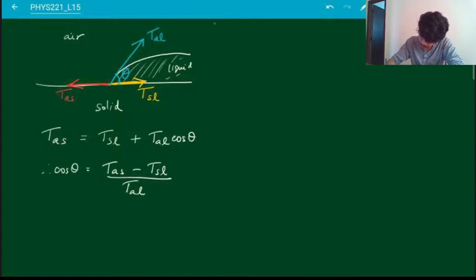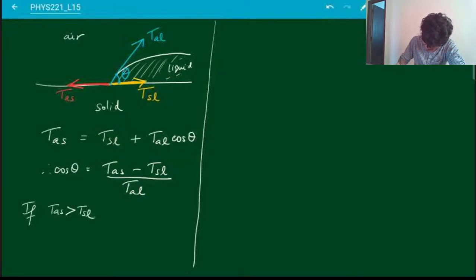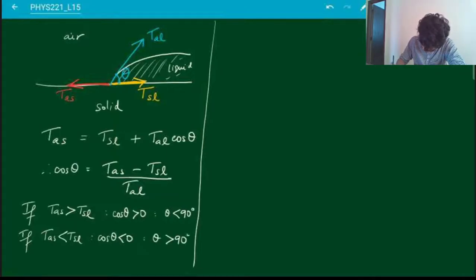Let's take two different cases and see what happens. If T_AS is greater than T_SL, then cos θ is positive, that means θ is less than 90 degrees. But if the other thing happens—if T_AS is less than T_SL—then cos θ is negative, which means θ is greater than 90 degrees. So what are these two cases?